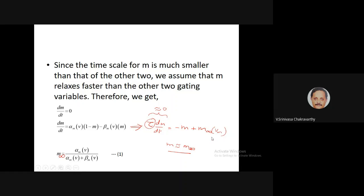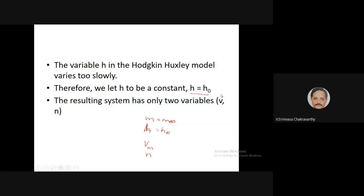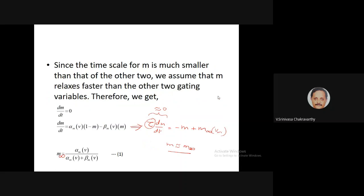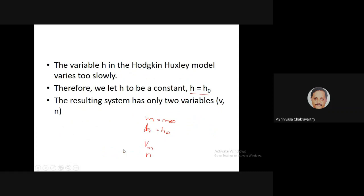We can write tau dm/dt equals minus m plus m infinity. If m is a fast variable, that means tau is a very small number, so we assume that m equals m infinity all the time. The other assumption is that h is a constant — a slow variable — so that eliminates two differential equations by converting them into static equations.